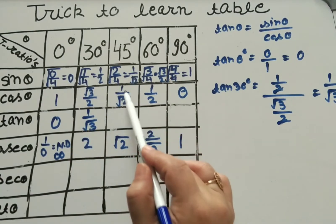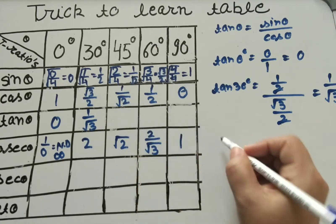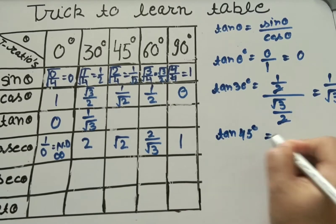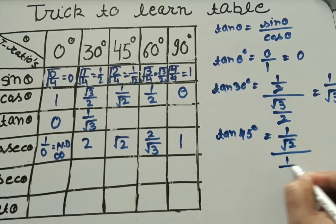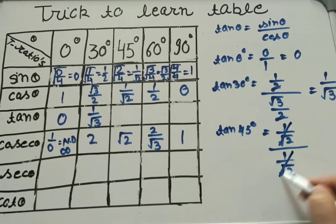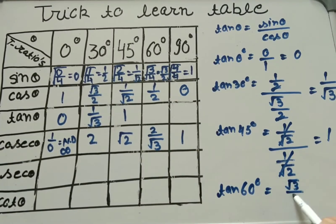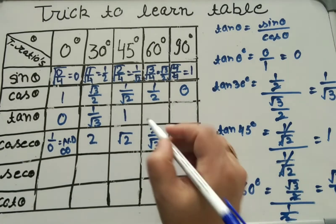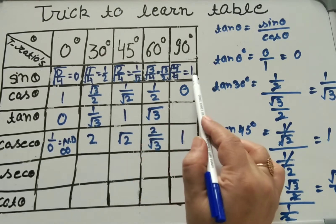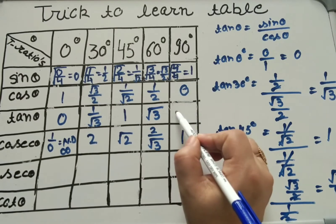For tan 45°: (1/√2) ÷ (1/√2) — both values are same, they cancel out — answer is 1. For tan 60°: (√3/2) ÷ (1/2) — 2 cancels — answer is √3/1 = √3. For tan 90°: 1/0, which is not defined.